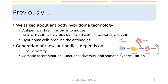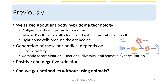The B-cell development is also subjected to positive and negative selections through both central and peripheral mechanisms. Although hybridoma technology is very mature and reliable, it requires using animals that may be more prone to batch-to-batch variation of the final product. So the question is, can we get antibodies without using animals?